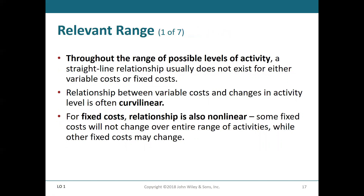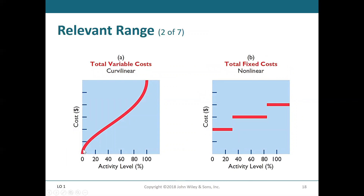We've mentioned the relevant range a couple of times. Throughout all possible ranges of activity, a straight line relationship doesn't generally exist for either variable costs or fixed costs. That's because you have areas of your operations where you're more efficient and where you're less efficient. So we actually tend to have what's called a curvilinear relationship. For fixed costs, we don't typically have a linear relationship either — some fixed costs won't change at all, while others might change at certain points, creating a jump. Variable costs go up very steeply at very low levels and again at very high levels, with a more linear range in between.